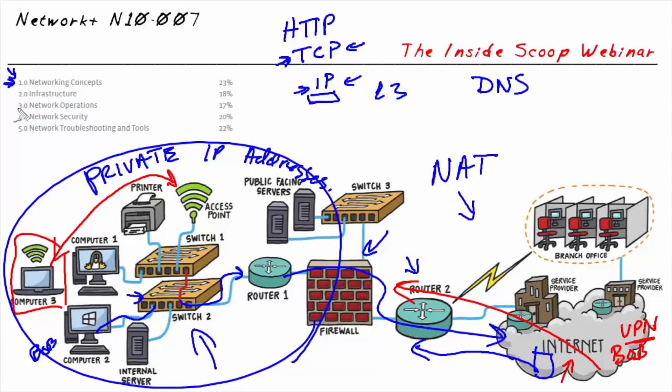With VPNs, we're touching on the domain of network security. We can also implement security on our networks by using administrative controls or physical controls. A physical control would be such as a lock on a door for the data center so that not just anybody could walk in. An administrative control would be something like requiring two individuals for making a change — one to identify and suggest a change, and another to approve it — which prevents mistakes or security issues from being injected into the network accidentally.